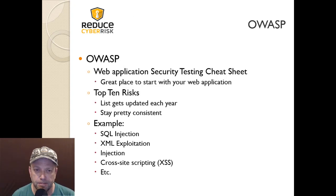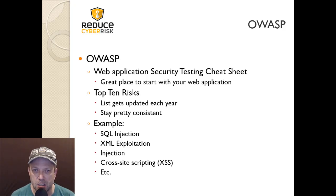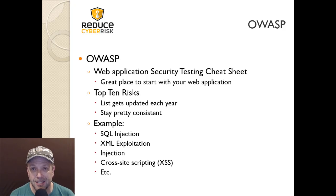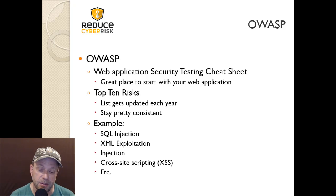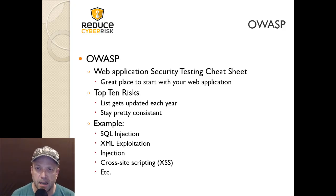Check out OWASP. They have a Web Application Security Testing Cheat Sheet — I'll have a link at the end of this section. It's a great place to start when dealing with your web application, covering the main things to consider in development. They also put out a Top 10 Risks list that gets updated every year. It stays pretty consistent — especially the top items — and is a really good summary of everything that deals with security in the CISSP world.